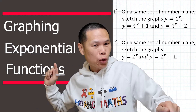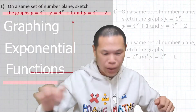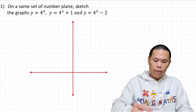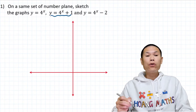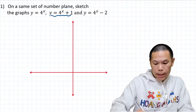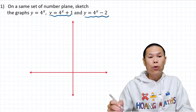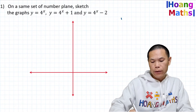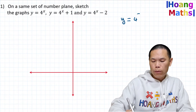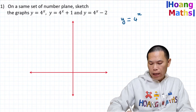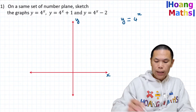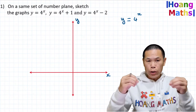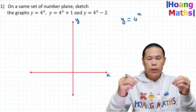Let's go straight into it. First, let's sketch y = 4^x, y = 4^(x+1), and y = 4^(x-2). We'll start with y = 4^x first. Let me label the x-axis and y-axis. Rather than drawing a table and plotting points, let me just go straight into a rough sketch.